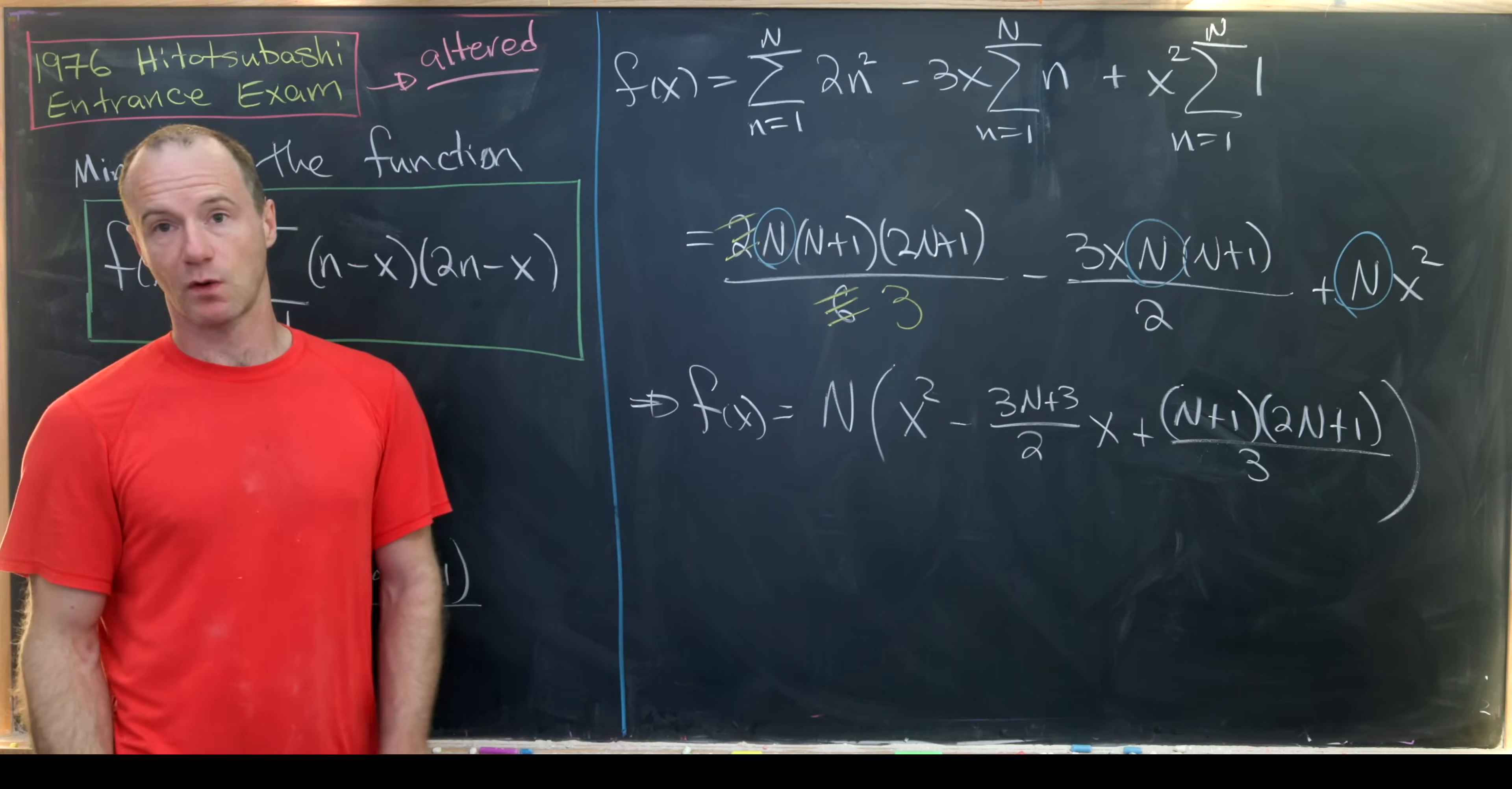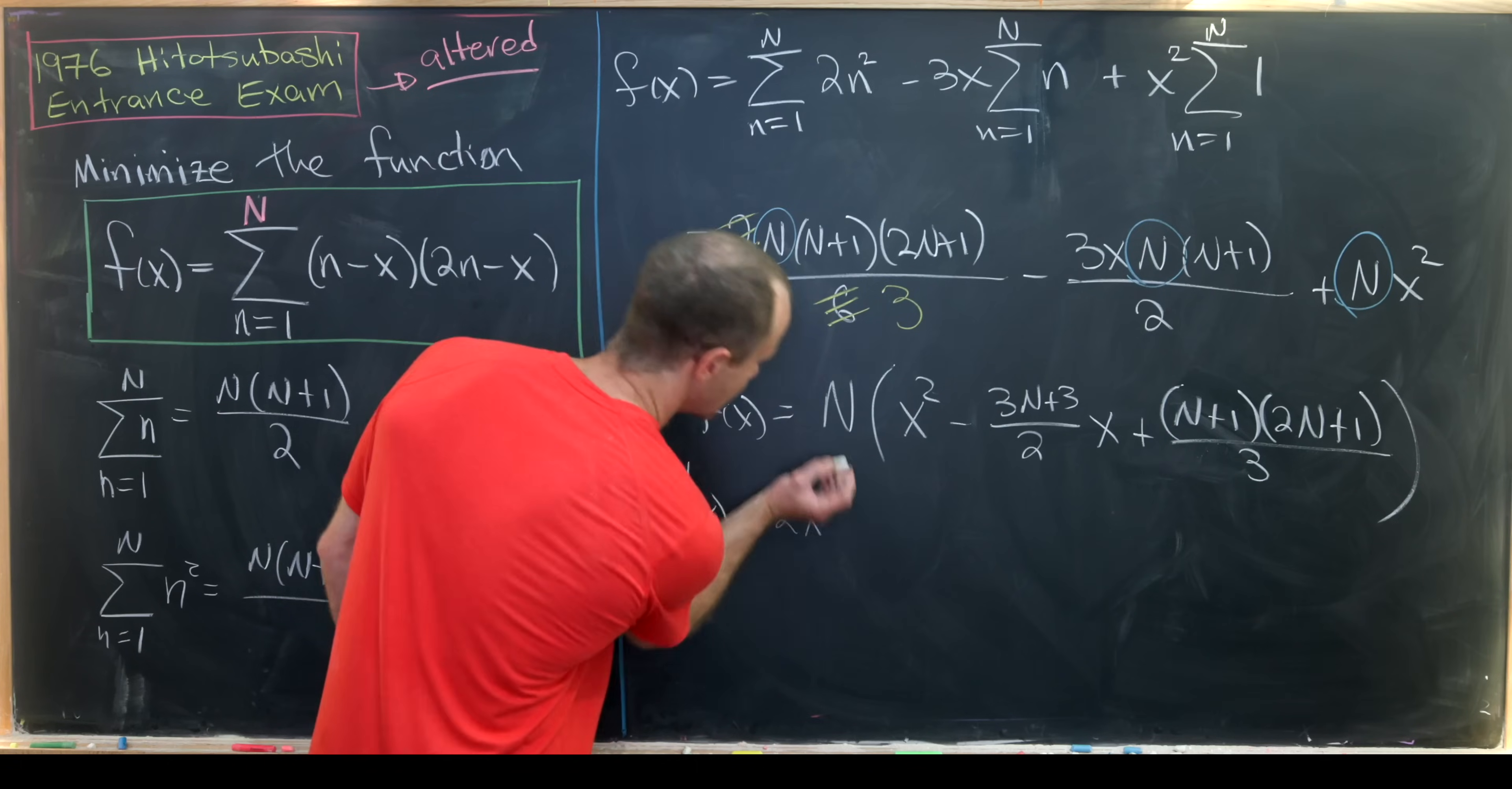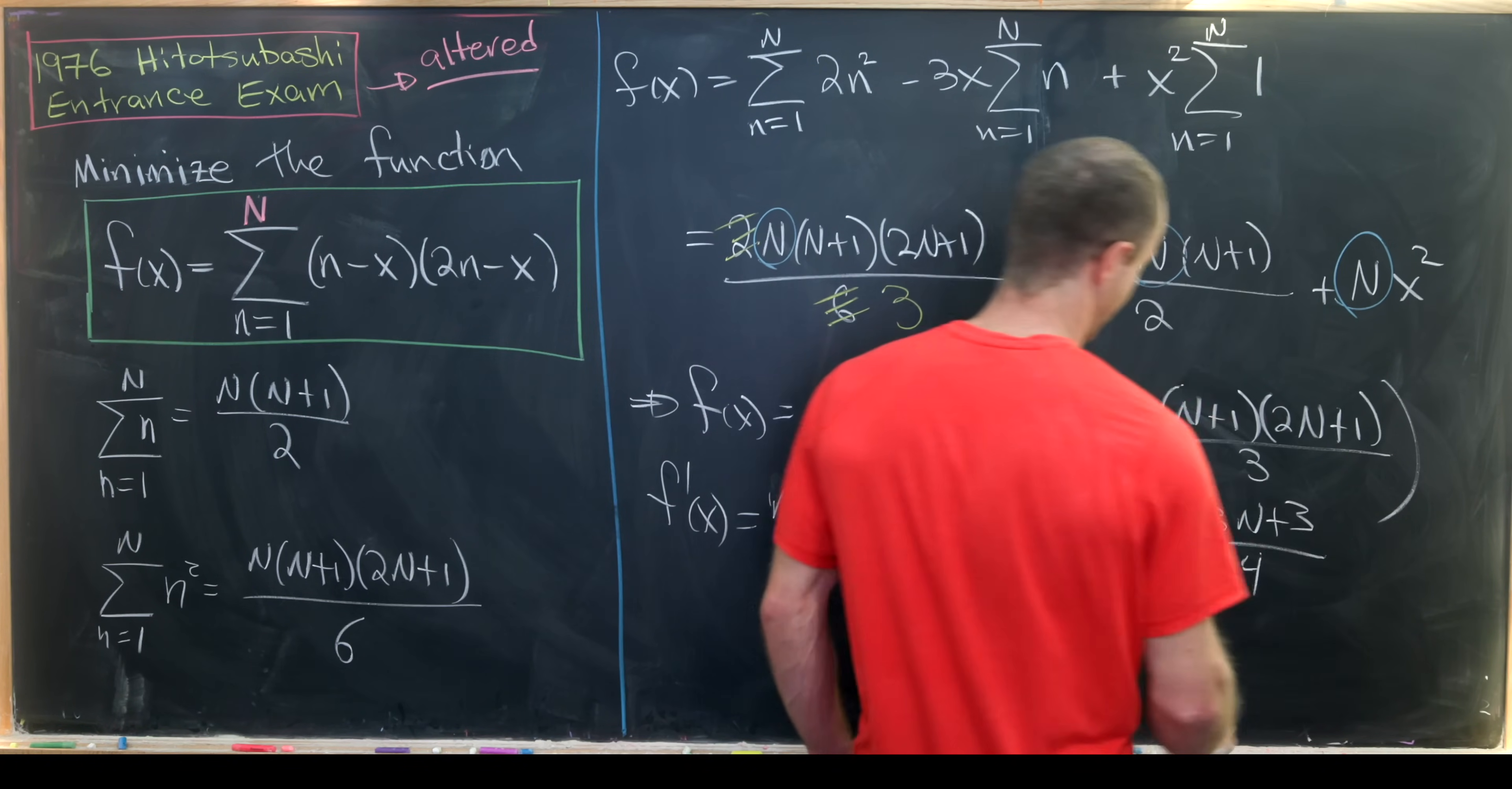So notice that our minimum will also occur where the derivative equals 0. The derivative is pretty easy to calculate. That'll be N times (2x - 3(N+1)/2) which means x will be equal to 3(N+1)/4.